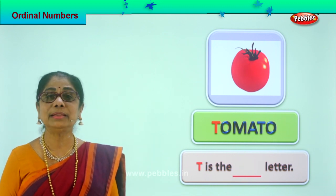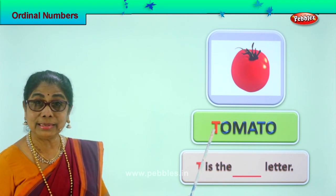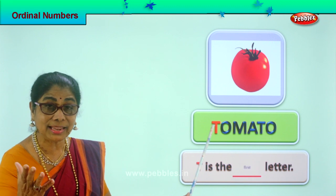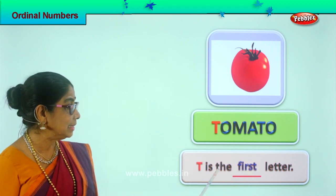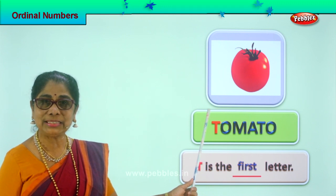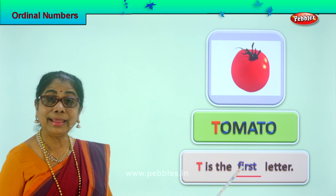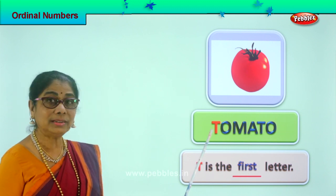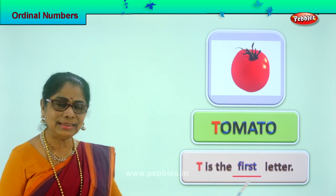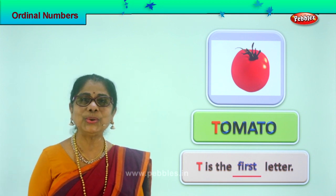Which letter is colored here? Letter T is colored. In ordinal number, what is the position? First letter — excellent! T is the first letter in tomato. T is the first letter. Spell first: F-I-R-S-T, first. T is the first letter. Read the sentence: T is the first letter. Good. Is it interesting? Did you enjoy?